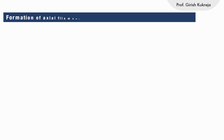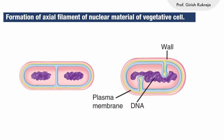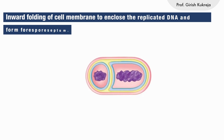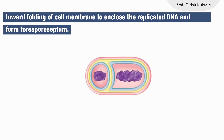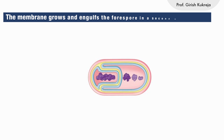The first step is the formation of an axial filament of nuclear material of the vegetative cell. This is followed by the inward folding of the cell membrane to enclose the replicated DNA and form the fore spore septum. The membrane then grows and engulfs the fore spore in a second membrane.